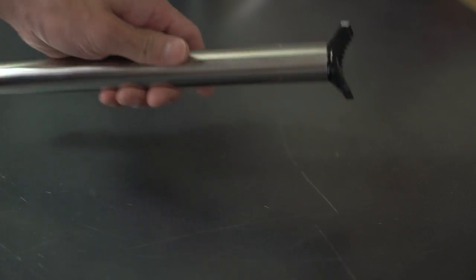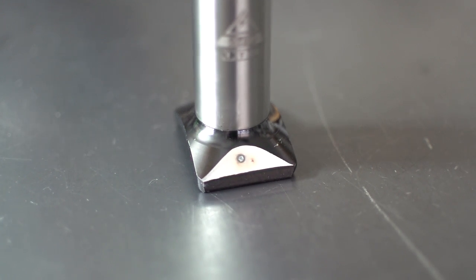But unfortunately the seat tube topper is not steel. It's aluminum pressed into a steel post. You can see here I made a little test weld to see what kind of material I was dealing with and it turned out it was indeed aluminum.